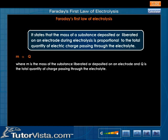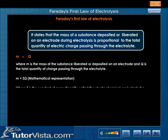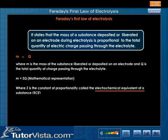The mathematical representation of this law can be written as M = ZQ, where Z is the constant of proportionality called the electrochemical equivalent (ECE) of a substance. Or M = ZIT.